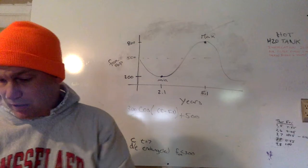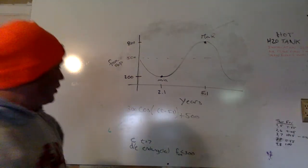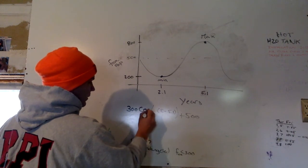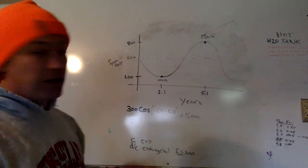And my marker is getting bad, so let me change here. 300 cosine. Okay, and then I just have to do my period.